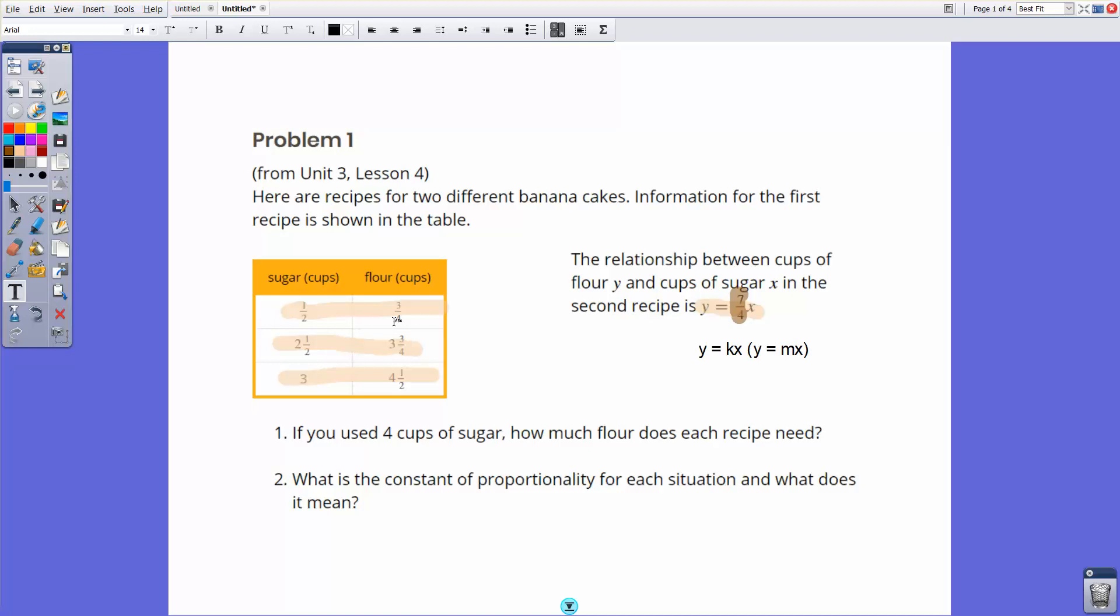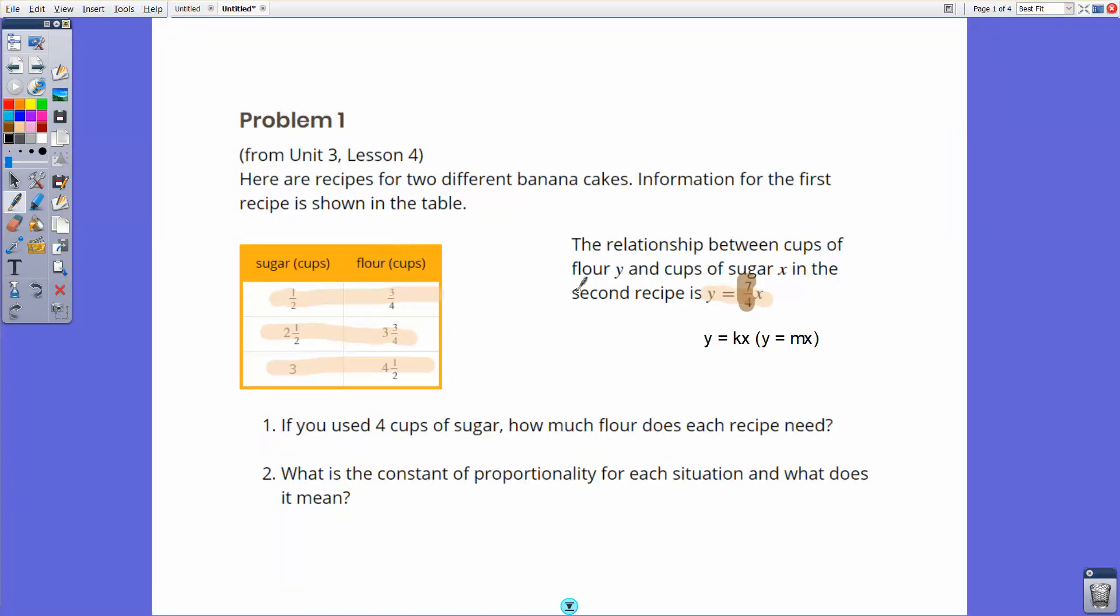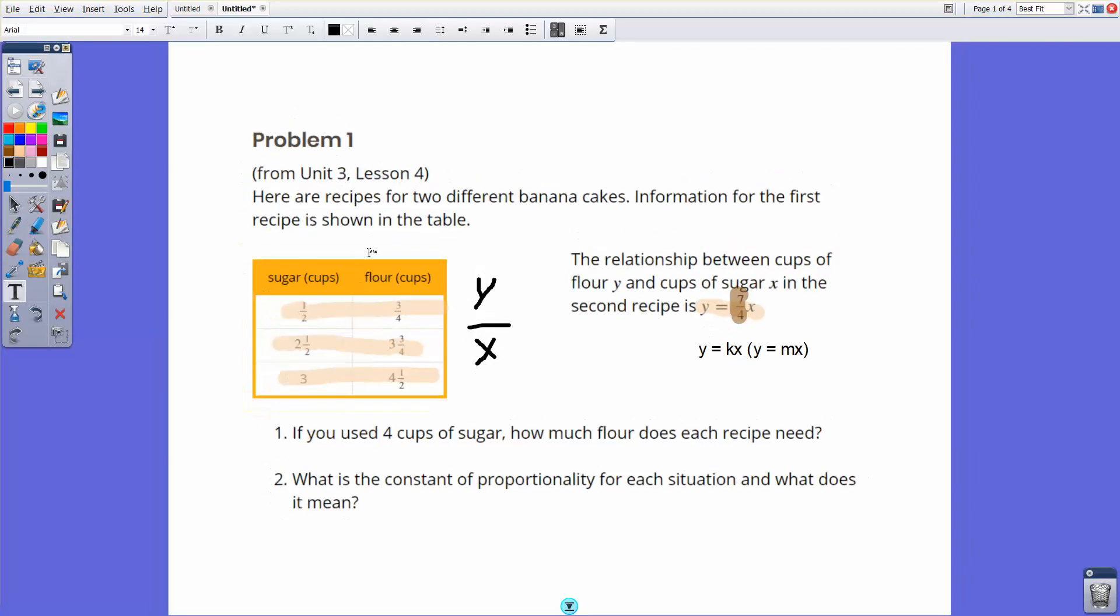So the number here, seven fourths, would be your rate of change of your y compared to x. Every seven y's would be over four x. That's how that works. Now over here, you have a table, but because you know it's a proportional relationship, all you really need to do is divide one of these by the other. So if you take the y, the second value here, which is your flour, and you divide that by your x, that's going to give you your constant of proportionality.